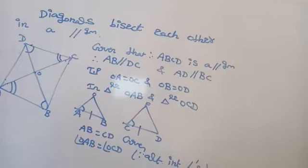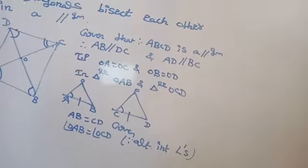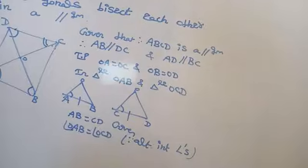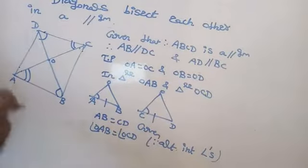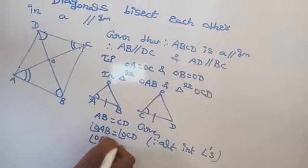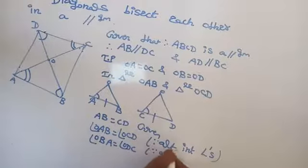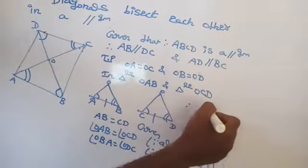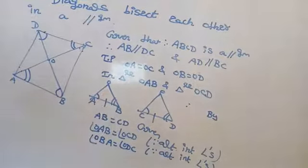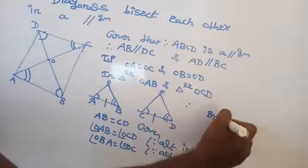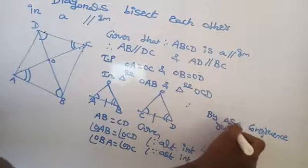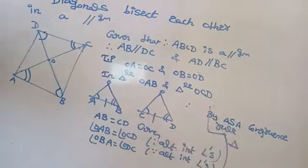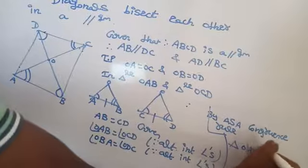Angle OAB equal to angle OCD, since AB is parallel to DC — alternate interior angles. Angle OBA equal to angle ODC — same reason, alternate interior angles. Therefore, by ASA congruence rule, triangle OAB is congruent to triangle OCD.